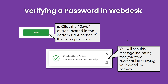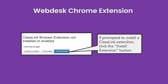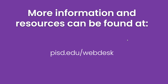The final step is to click Save in the lower right corner of the pop-up window. You should see confirmation in the lower right corner that the Webdesk password was verified. This process will update the credentials for all apps in Webdesk that use that username and password. On a desktop or laptop computer you might be prompted to install a Chrome Webdesk extension — click the blue Install Extension button to proceed. For more information or resources, please visit pisd.edu/webdesk.